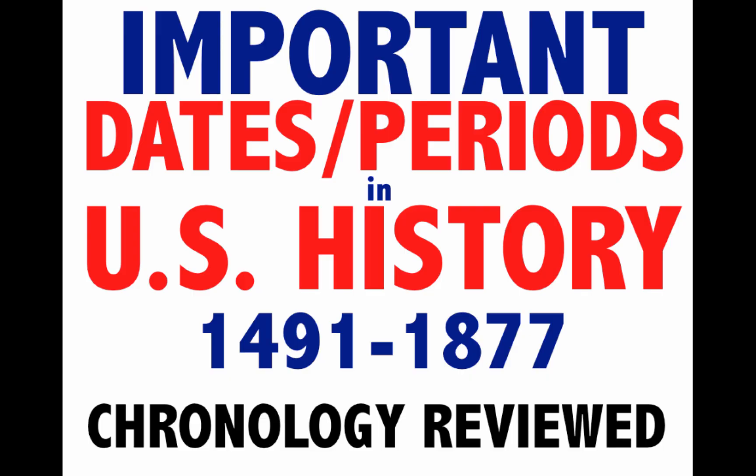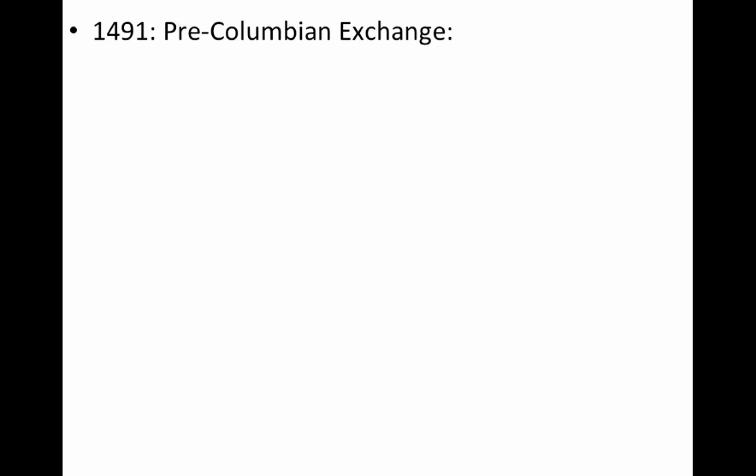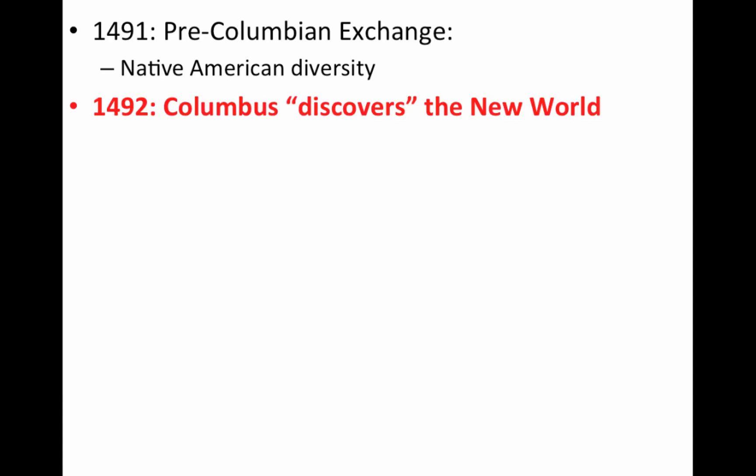You should know these dates and kind of know the order of things. So let's get started. 1491 is really important — that's pre-Columbian exchange, so before Columbus, before the Europeans arrive. Make sure you know about the Native American diversity. A lot of Native tribes are adapting to their environments, and there are a lot of unique cultures.